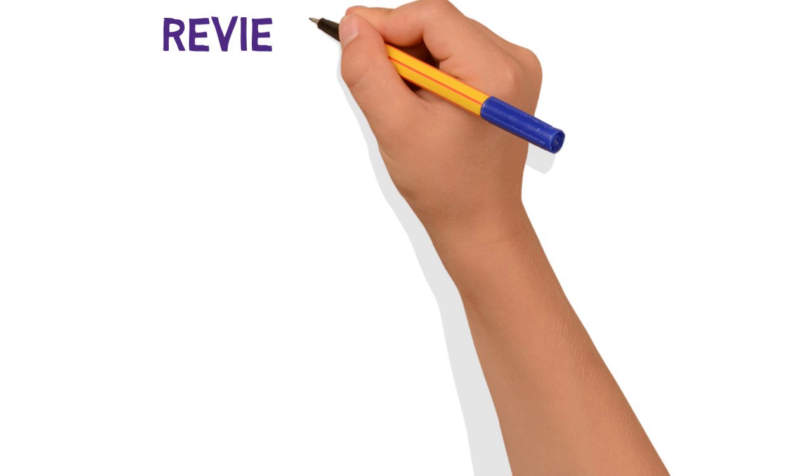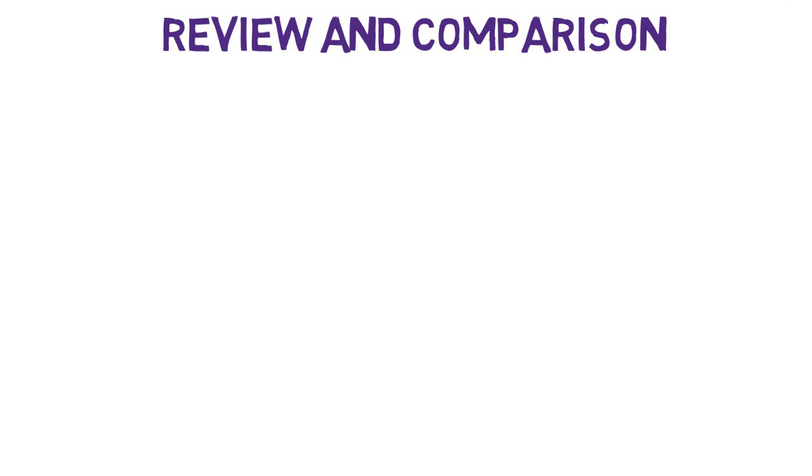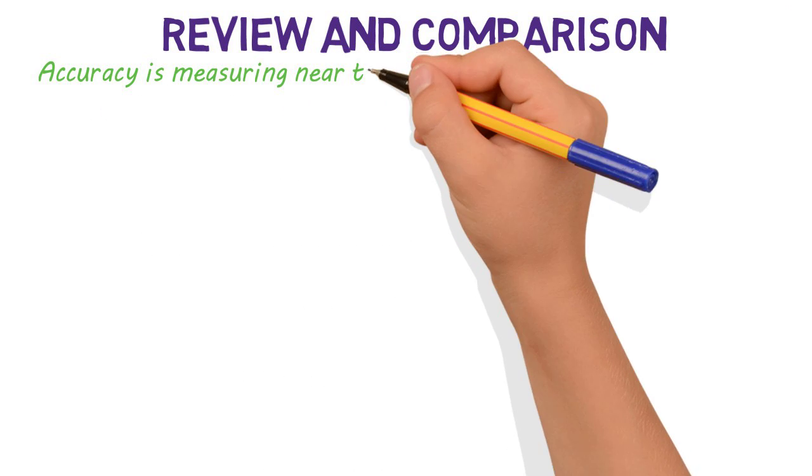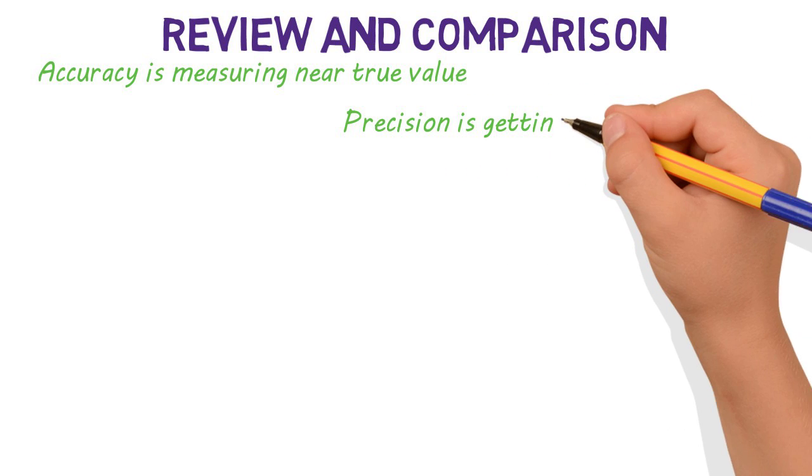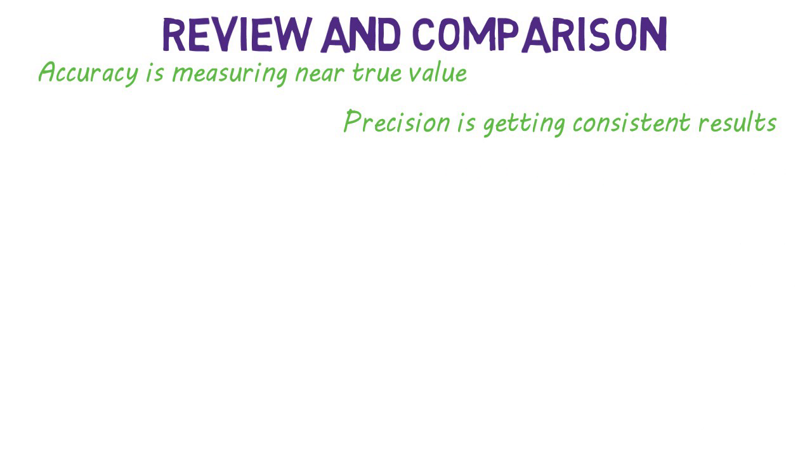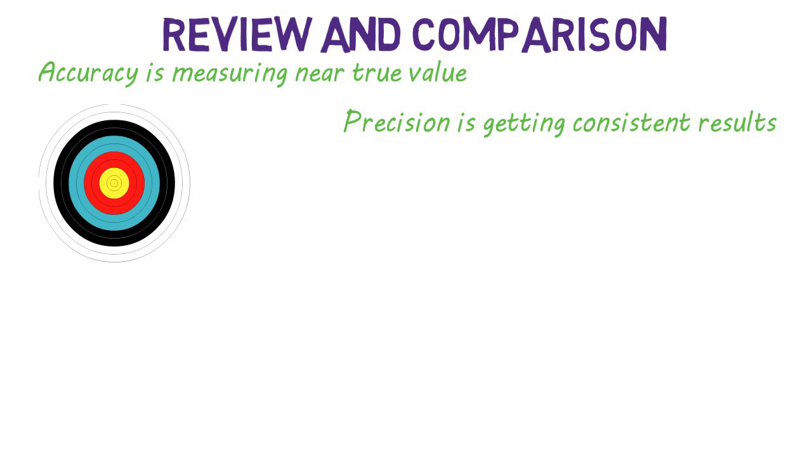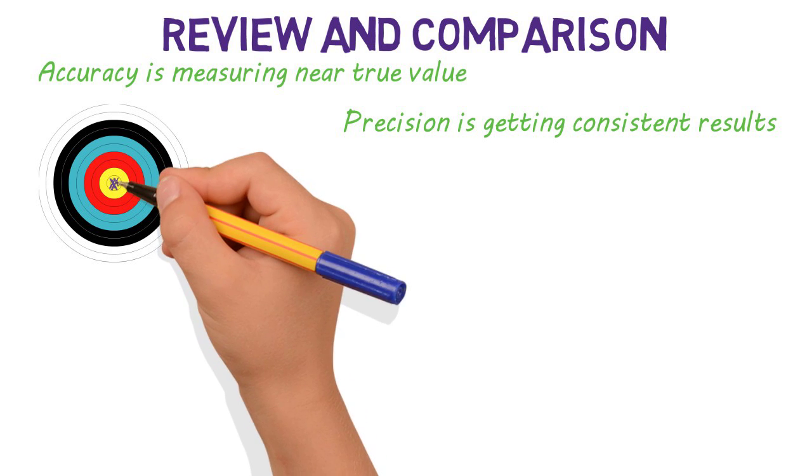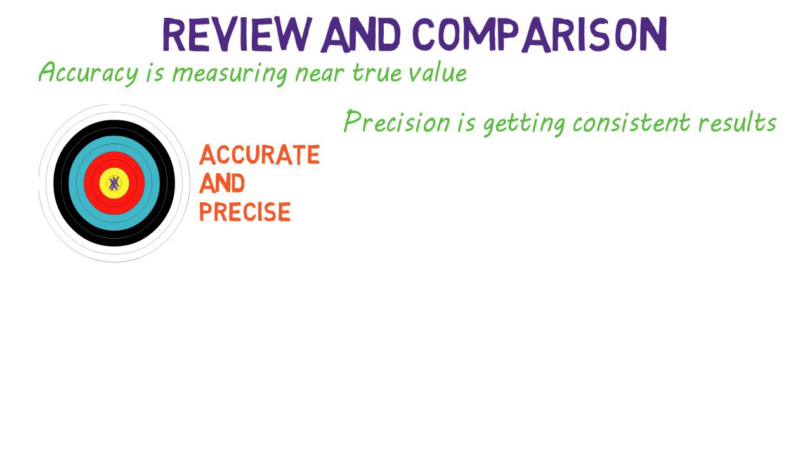So let's do a quick review and comparison. Accuracy is measuring near the true value, while precision is getting consistent measurements or results. Let's use the target for some more examples. This would be accurate and precise. All the points are close together and average around the true value.